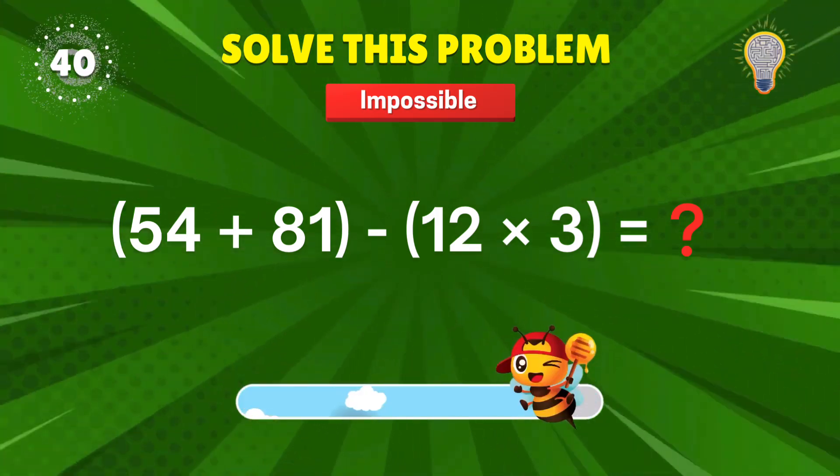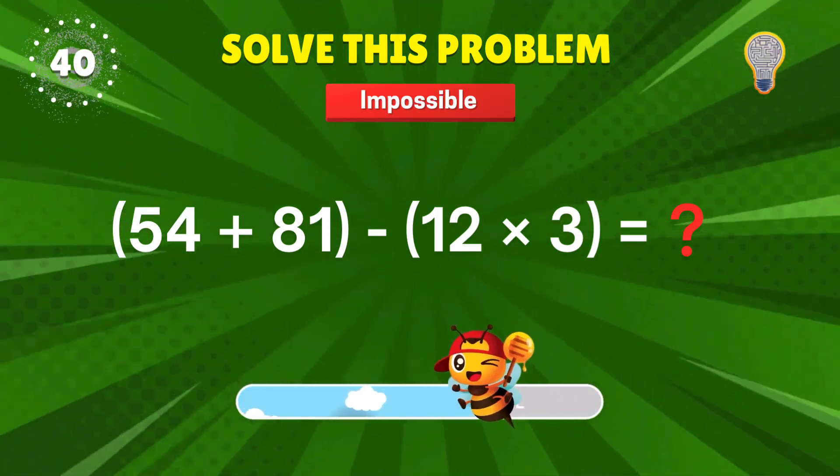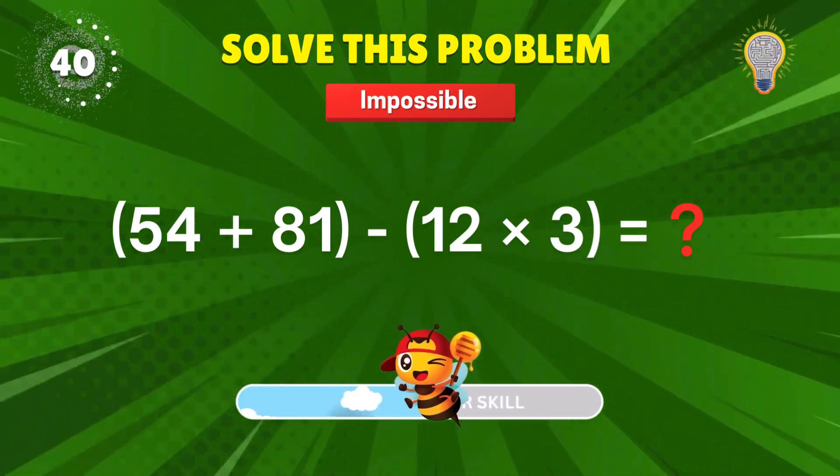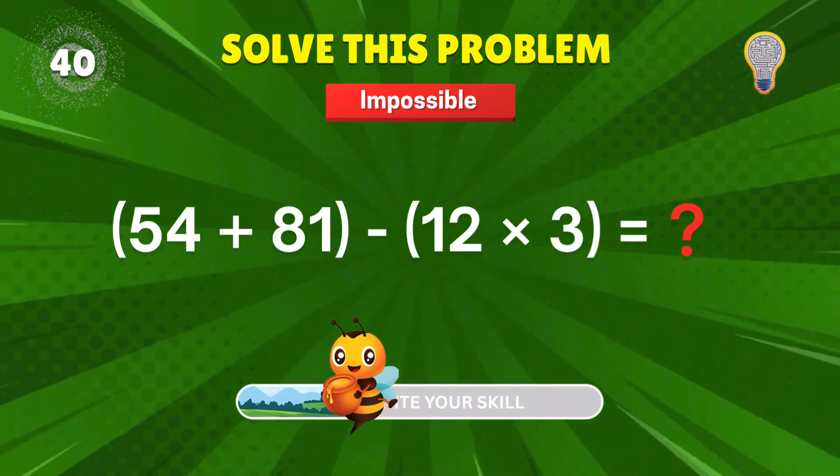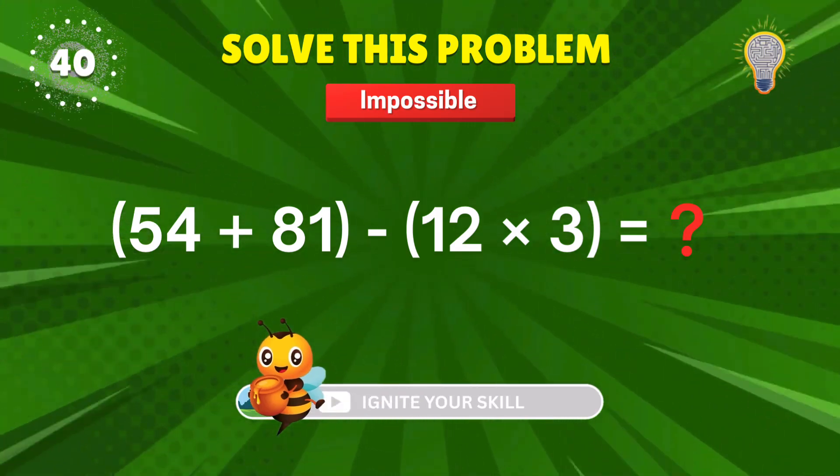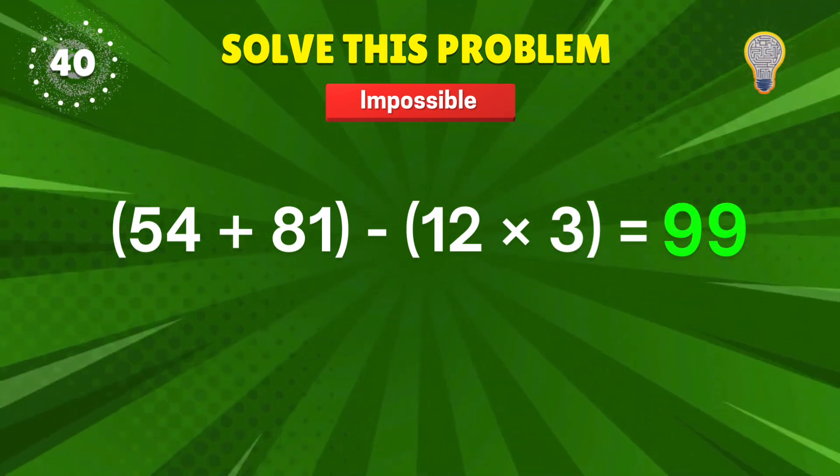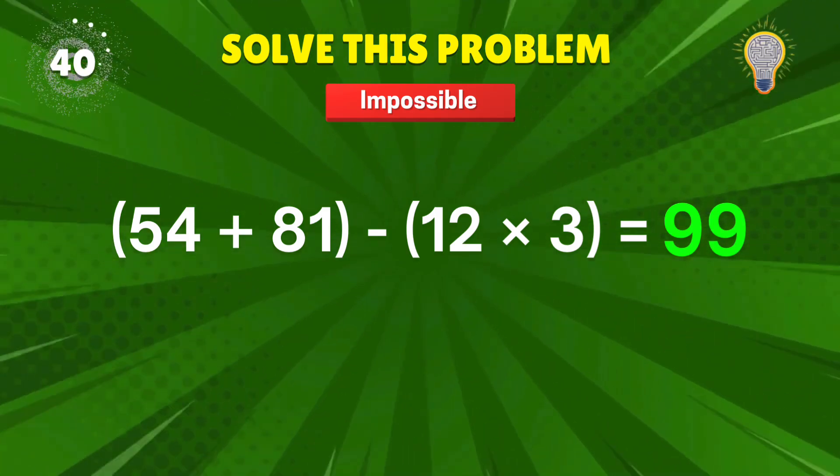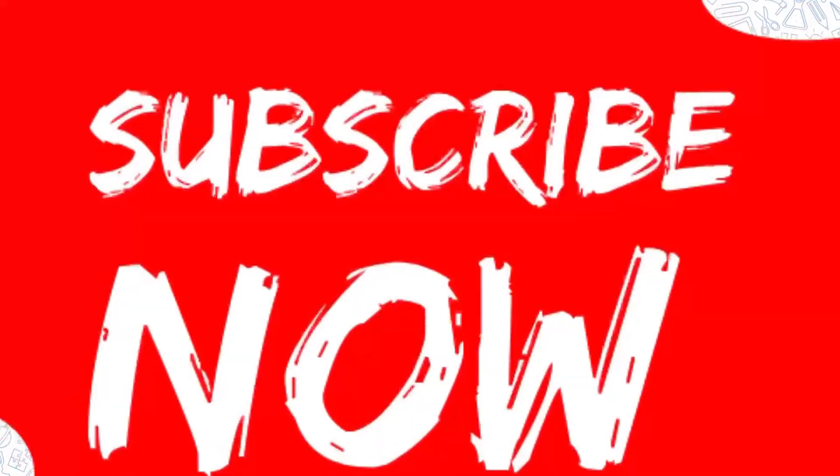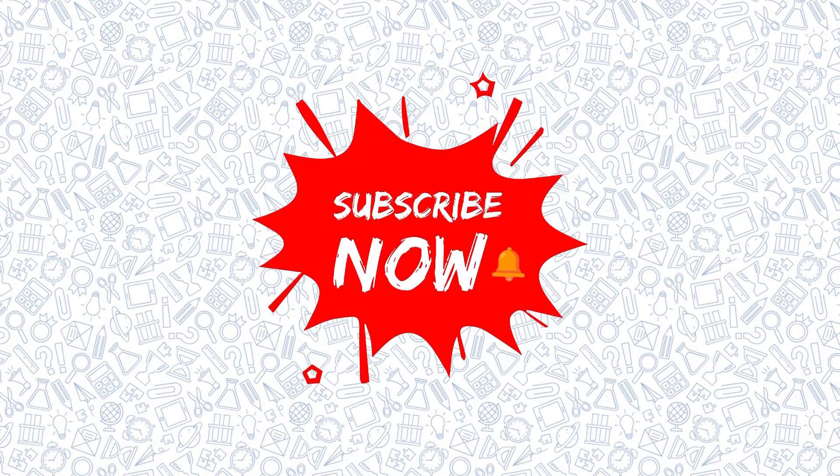54 plus 81? 12 times 3? Last one. Go out with a bang. 99. You did it. Final plus 1 point. Bravo. You've just completed the maths quiz challenge. If you scored 25 or more, hit like to show off your brainpower, and drop your score in the comments. Let's see who rules the numbers.